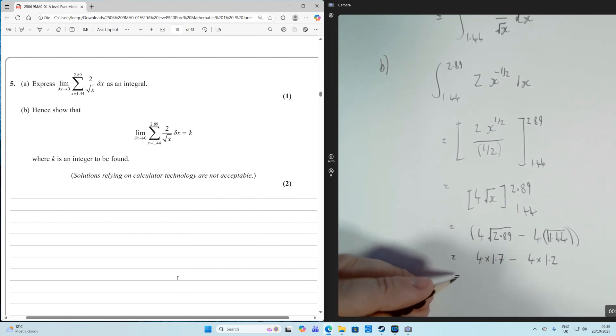The square root of 1.44 is 1.2. And when we work that out, that turns out to be 2. And that is that question done.